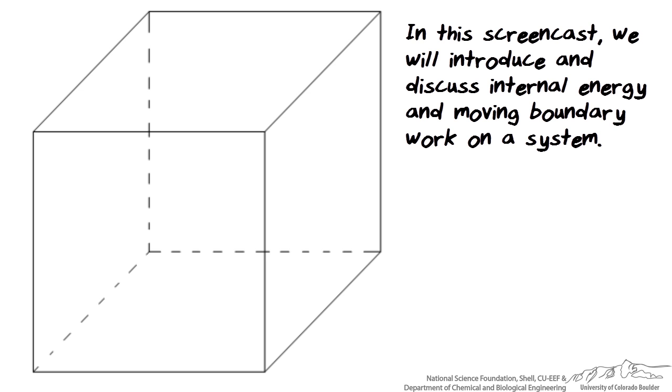You know by conservation of energy, the initial potential energy of that object has all been translated into its kinetic energy. But there is a third form of energy known as internal energy that is a little bit more difficult to conceptualize.